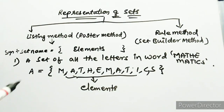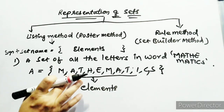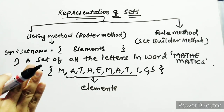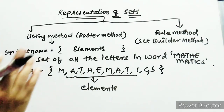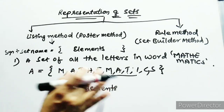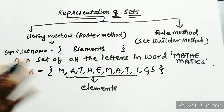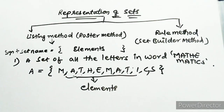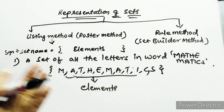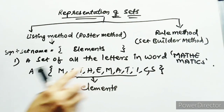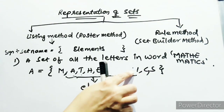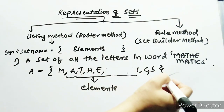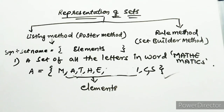One important thing to remember: whenever you use the roster method, all elements must be unique — no repetition is allowed. In MATHEMATICS, the letters M, A, and T are repeated. So the correct form is: M, A, T, H, E, I, C, S — all letters must be unique.